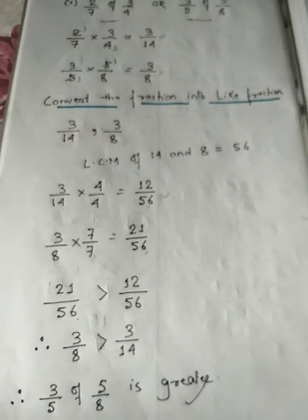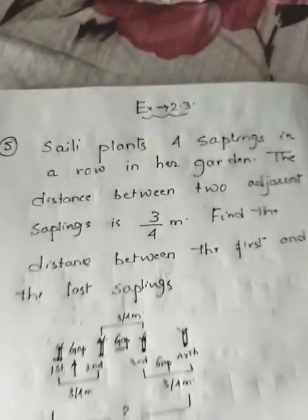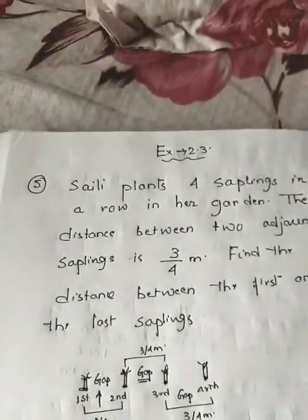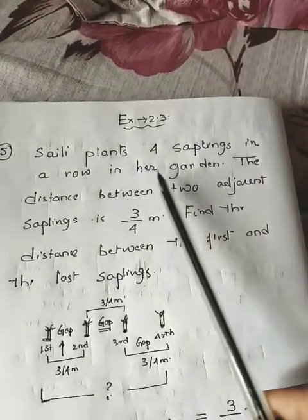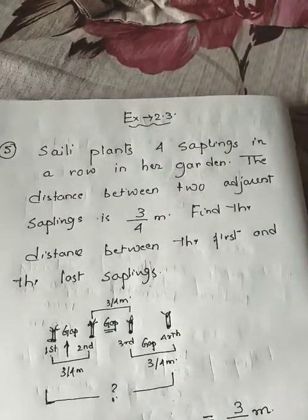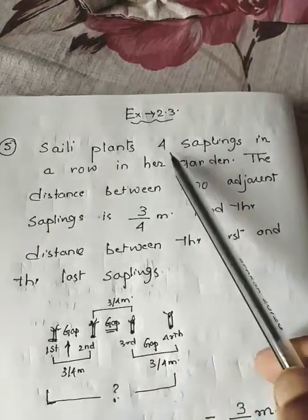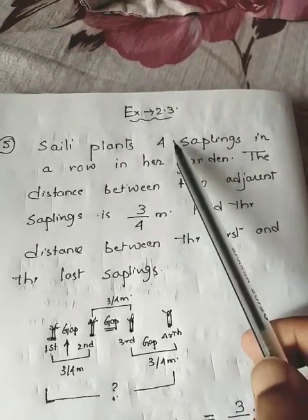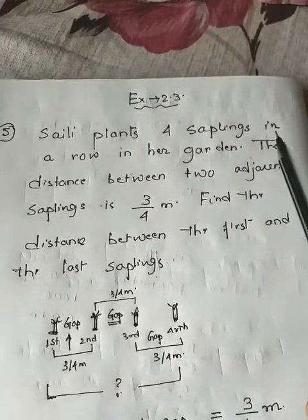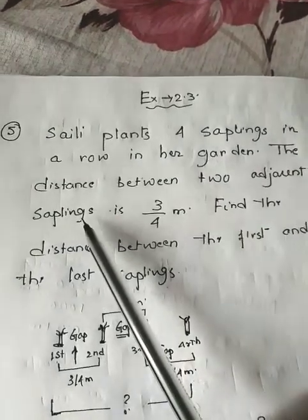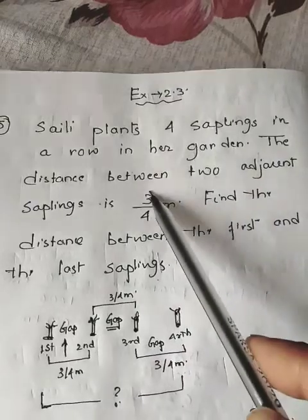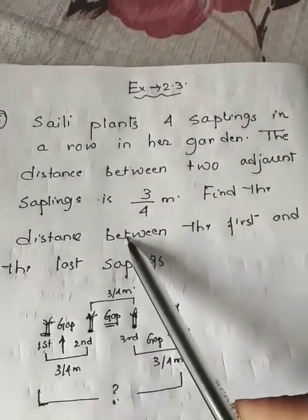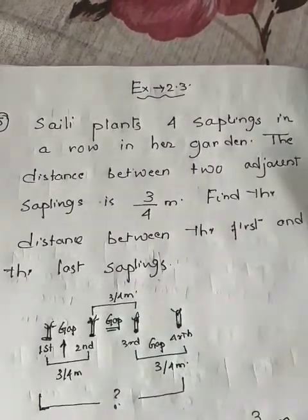Now let's move on to question number 5 of exercise 2.3. Sally plants four saplings in a row in her garden — saplings means small plants. The distance between two adjacent saplings is 3/4 meter. We need to find the distance between the first and the last sapling.